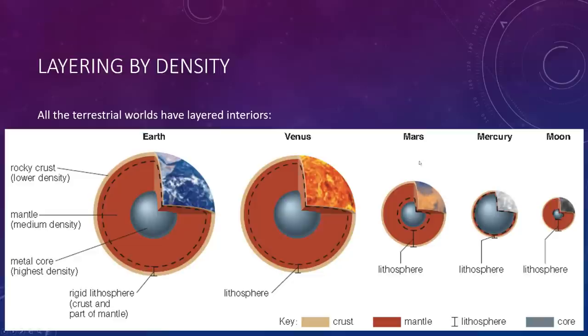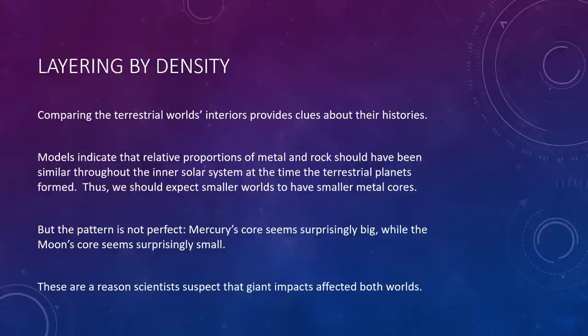You'll note a lot of interesting features here, and this is another one of those images that's good to reference if you ever need it. For example, Mercury has a really large core compared to the rest of its interior. And then the Moon is kind of the opposite, has a very small core compared to the rest of its internal structure. So, we're going to learn a little bit about how all of these things came about.